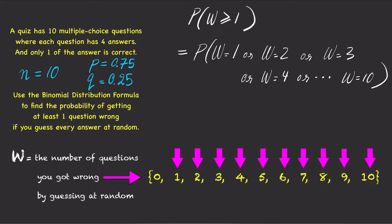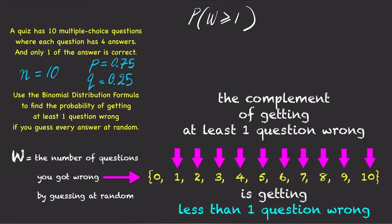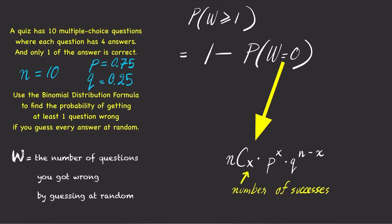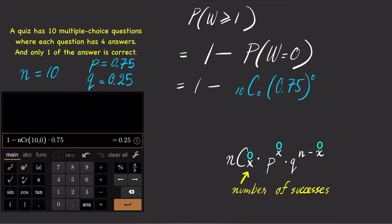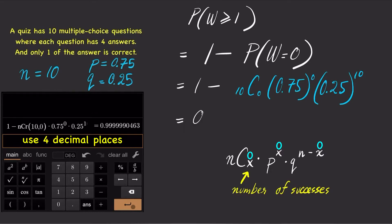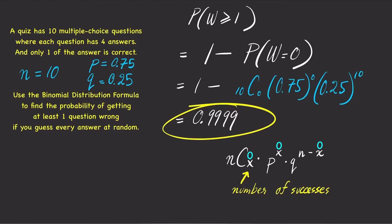Using the complement rule here would be much easier and much quicker. The complement of getting at least one question wrong is getting less than one question wrong, which is getting 0 questions wrong. So P(w ≥ 1) = 1 minus P(w=0). For P(w=0), the number of successes is 0. Using the binomial distribution formula, we get C(10,0) times 0.75 to the 0 times 0.25 to the 10. Type this into your calculator and we get 0.9999. In other words, the probability of getting at least one question wrong is 99.99%.